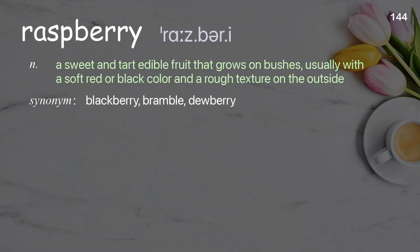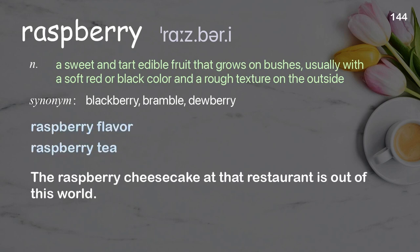Raspberry: a sweet and tart edible fruit that grows on bushes, usually with a soft red or black color and a rough texture on the outside. The raspberry cheesecake at that restaurant is out of this world.